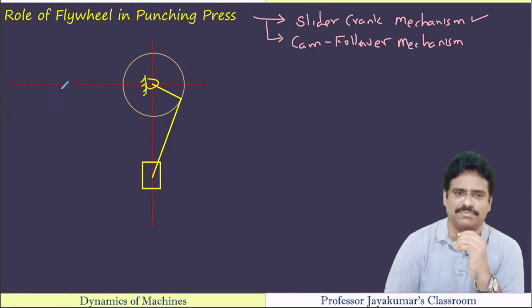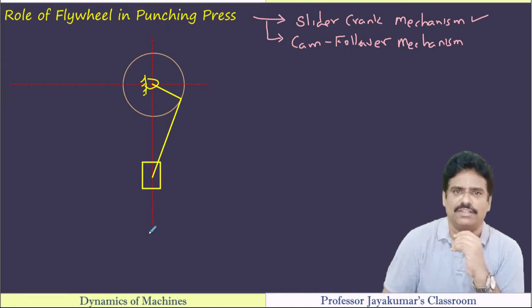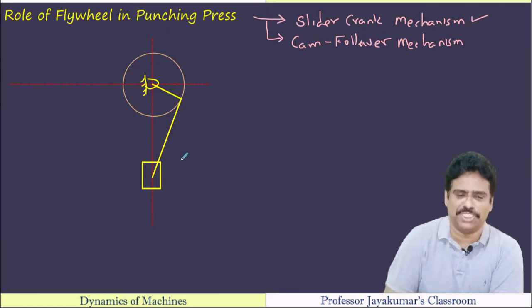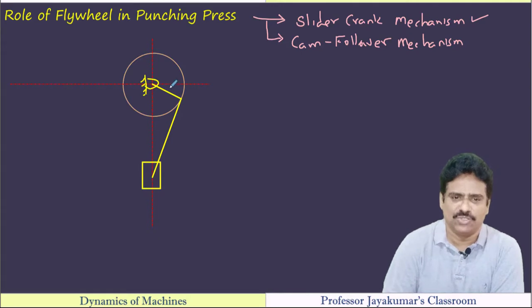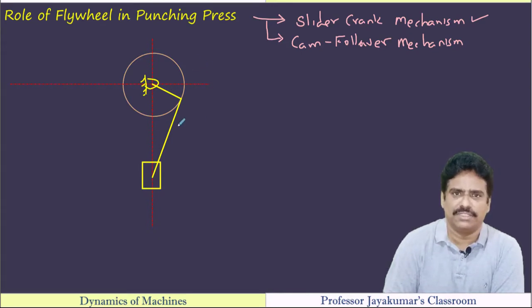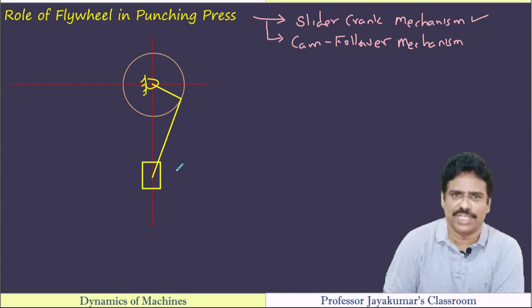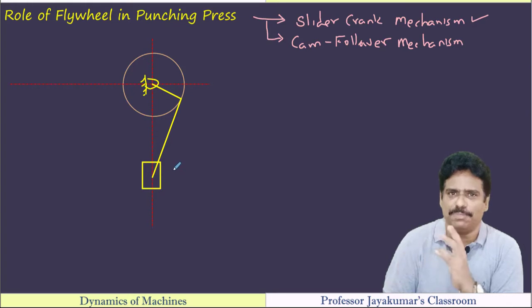This is a slider crank mechanism. This is the line of stroke or line of operation. This is the crank, then the connecting rod. Instead of a slider, we are replacing it with the punch.